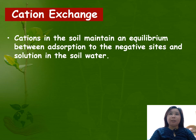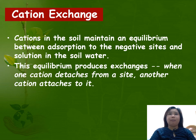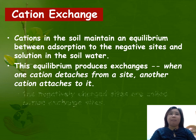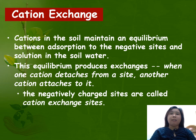Cations in the soil maintain an equilibrium between adsorption to the negative sites and solution in the soil water, and this equilibrium produces exchanges. When one cation detaches from a site, another cation attaches to it. The negatively charged sites are called cation exchange sites.